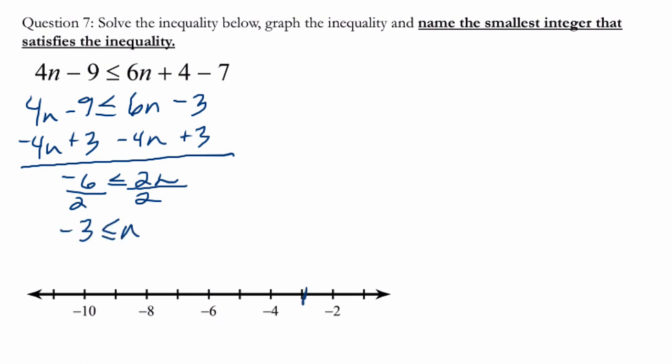So on a number line, there's a negative 3 right between the negative 2 and negative 4, and n could be equal to negative 3 or larger than it.